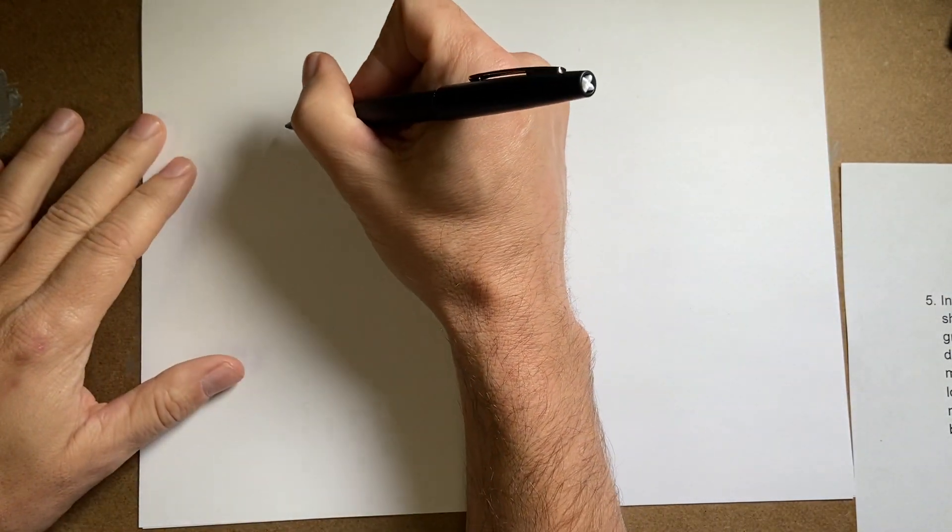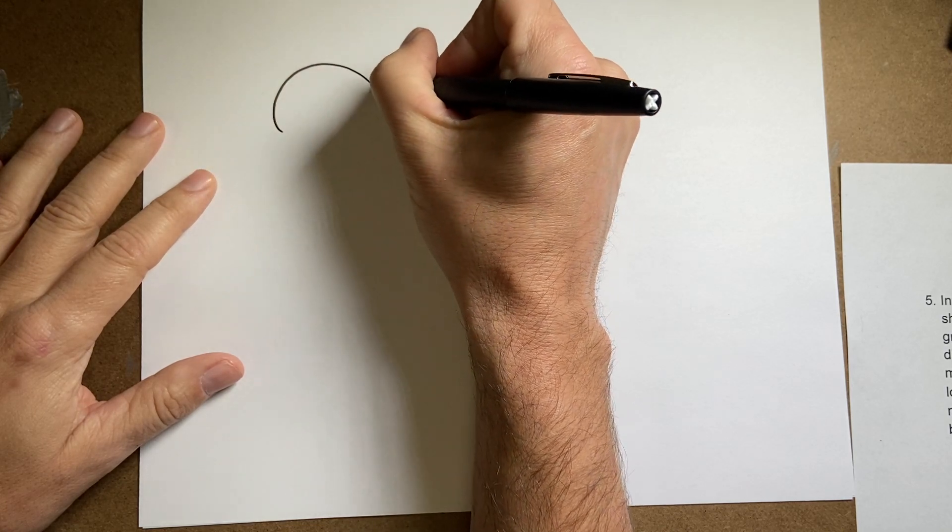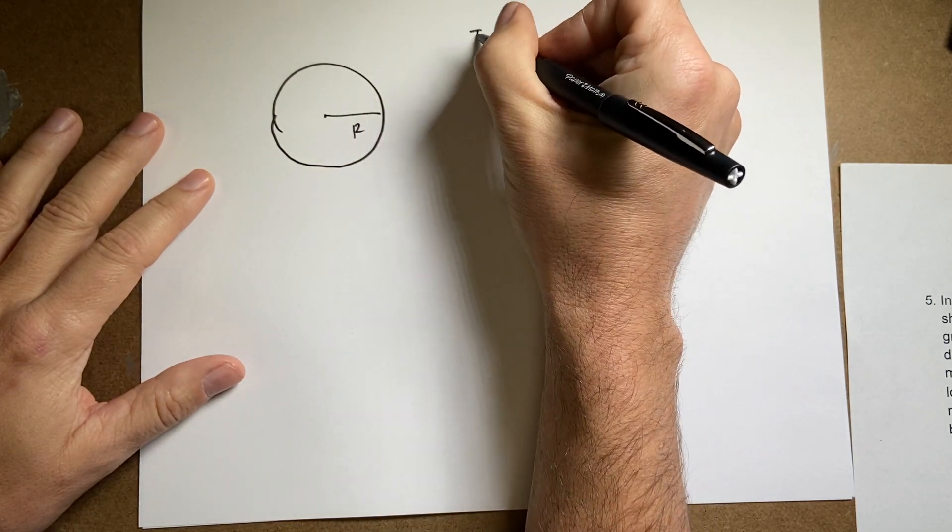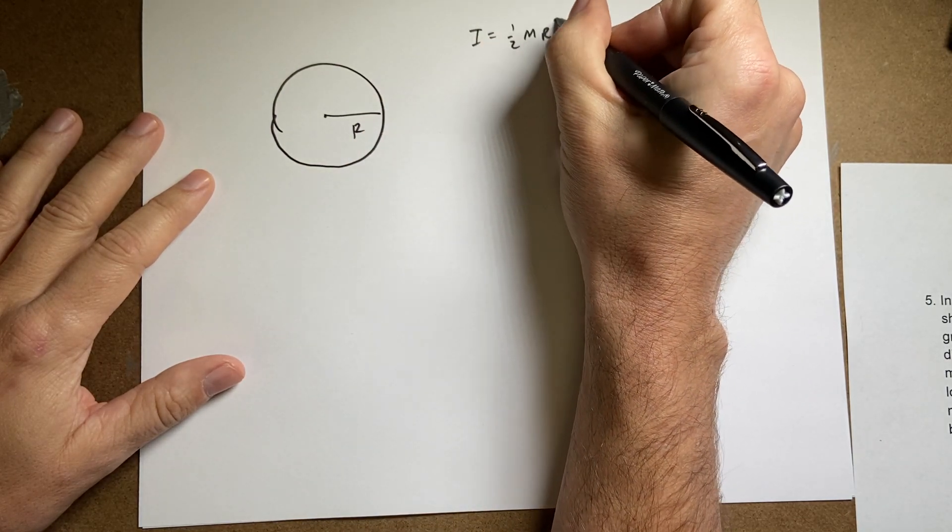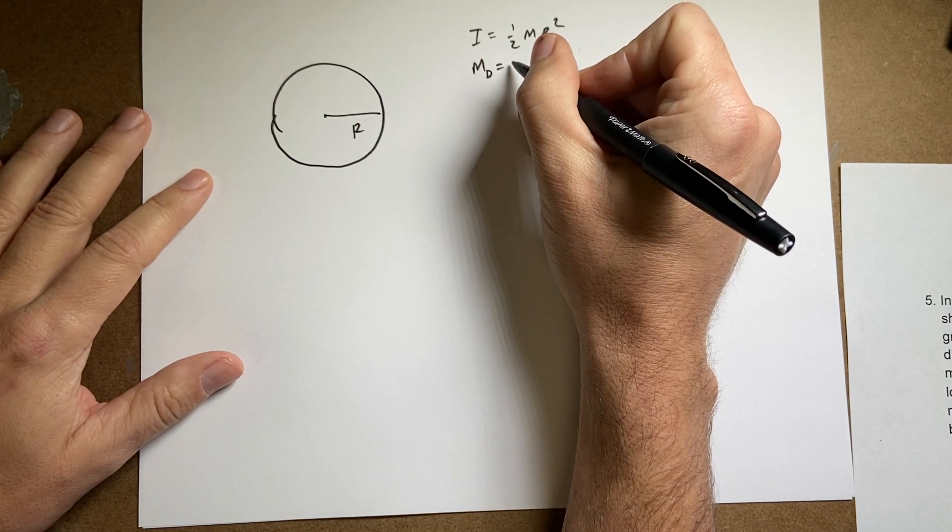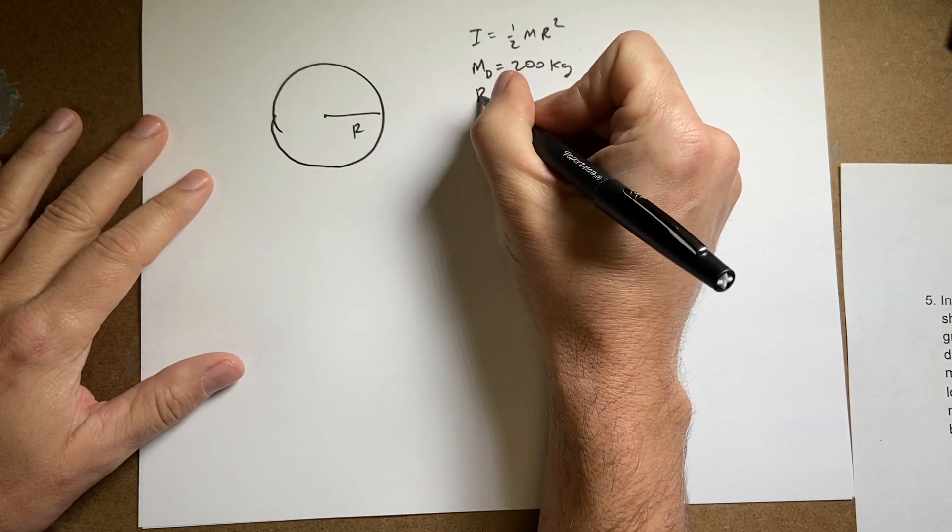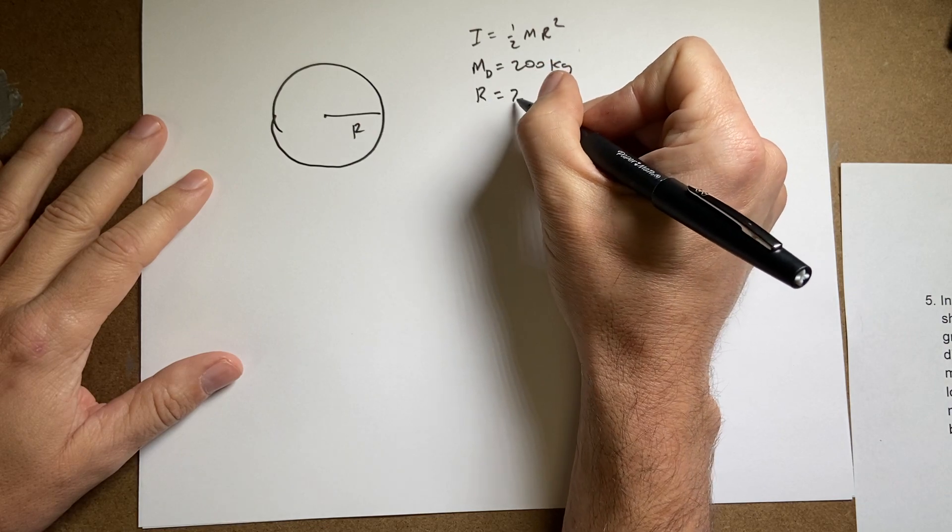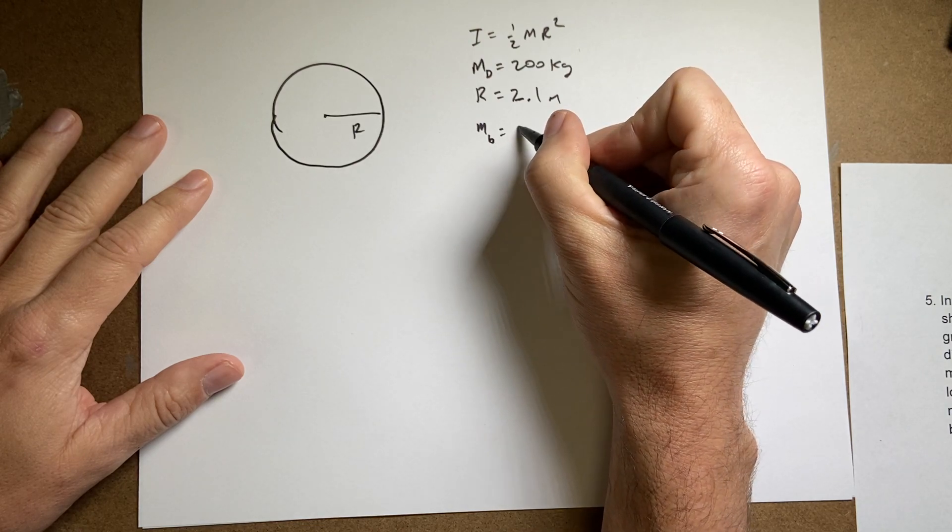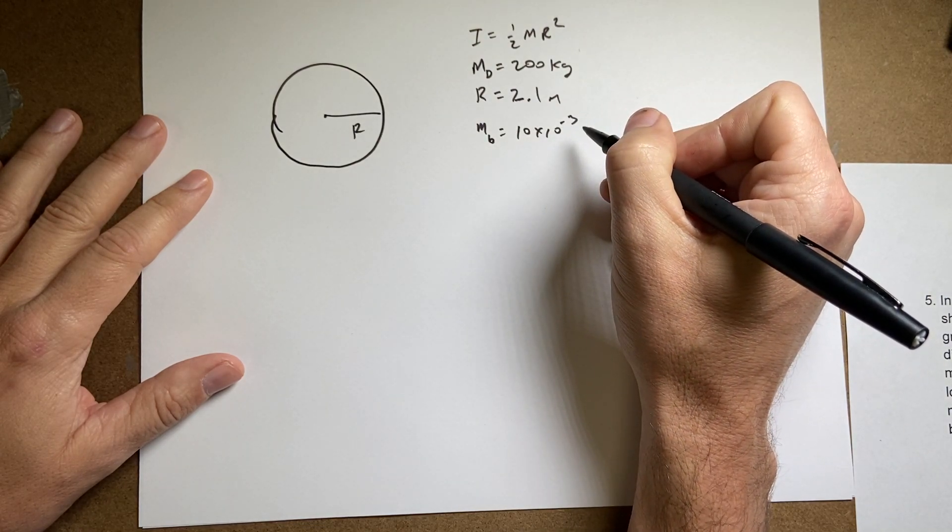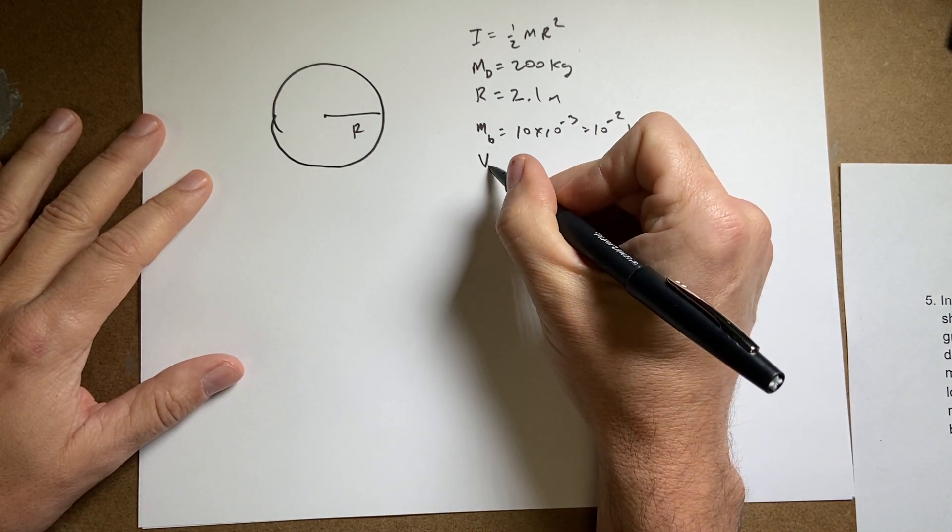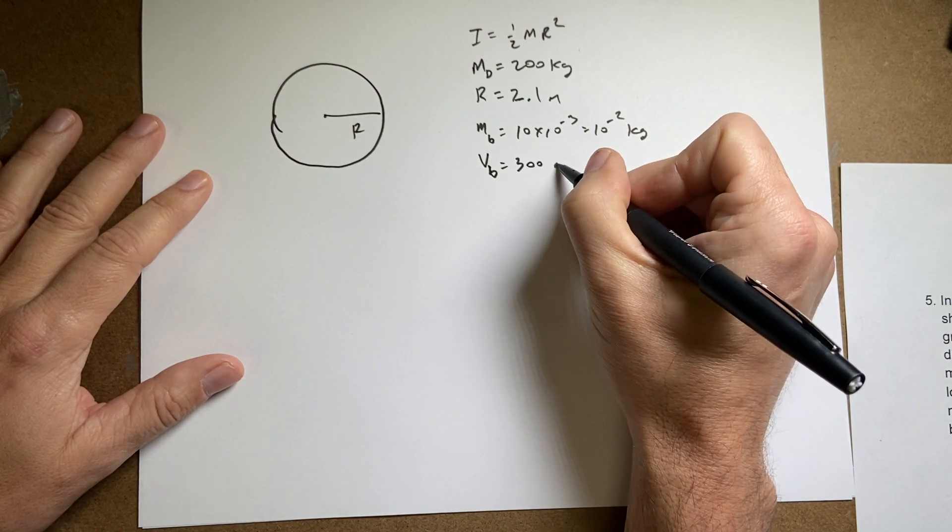So let's draw a picture. Here's my merry-go-round. It's a disk with radius R. Now let's put I equals one-half MR squared. M disk is 200 kilograms. R disk, I'll just leave that as R, is 2.1 meters. And M bullet is 10 times 10 to the negative 3, which would be 10 to the negative 2 kilograms. And V bullet is 300 meters per second.